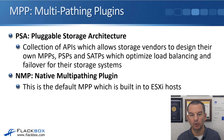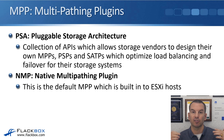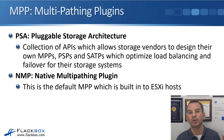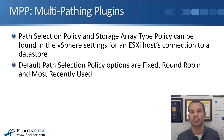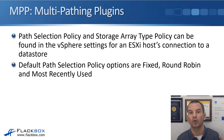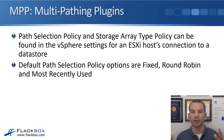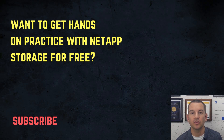PSA is the VMware pluggable storage architecture — a collection of APIs that allows storage vendors like NetApp to design their own MPPs, PSPs, and SATPs, which optimize load balancing and failover specifically for their storage systems. NMP is the native multipathing plugin, which is the default MPP from VMware built into ESXi hosts. Path selection policy and storage array type policy can be found in the vSphere settings for an ESXi host connection to a datastore. The default path selection policy options are: fixed, which always uses a particular fixed path; round robin, which load balances across Fabric A and Fabric B connections; and most recently used.